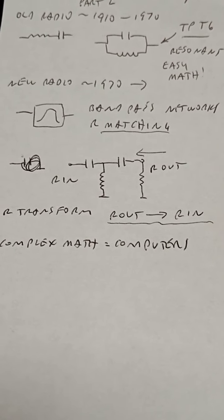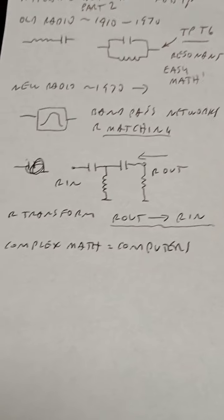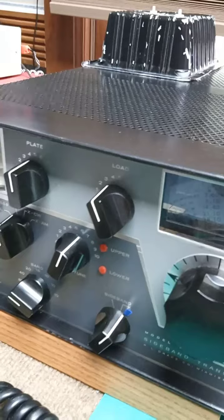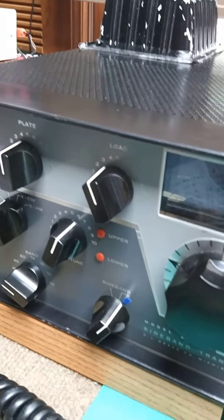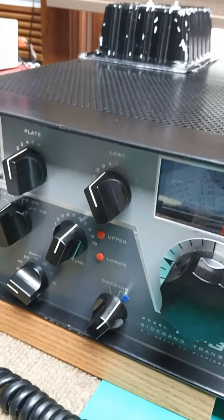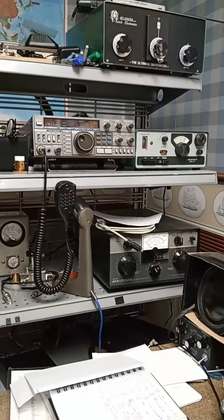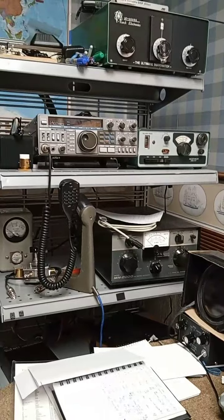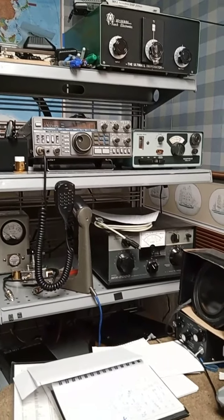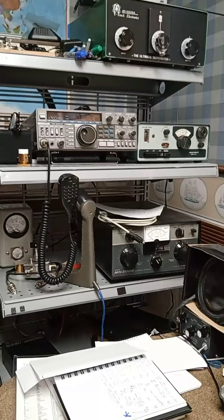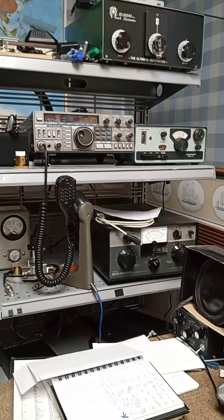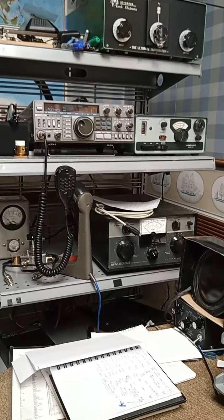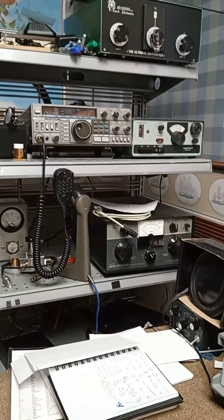The bandpass filters have eliminated the need, for example, to do plate and load tuning in this old transmitter because this is a pi network. The modern bandpass filters, such as in the Kenwood, eliminate that because they're essentially a constant resistive transform across the entire band. That's the magic of Foster's ladder network. A bandpass shape is really implying a constant resistance transform across a band. That's what it really means. It's really not about frequency, it's about matching resistive values.